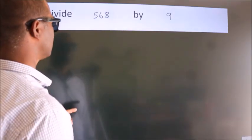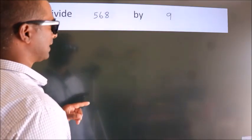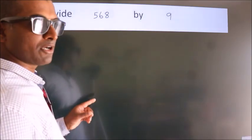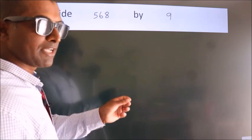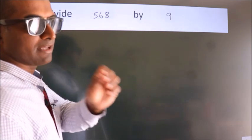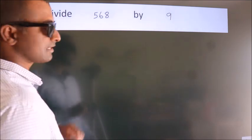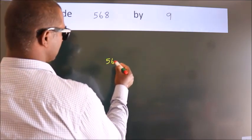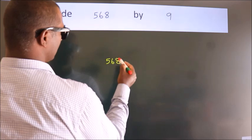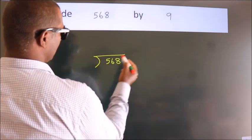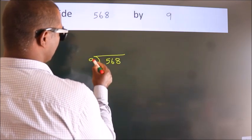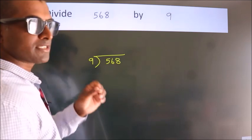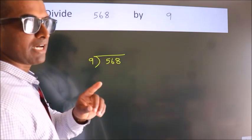Divide 568 by 9. To do this division, we should frame it in this way: 568 here, 9 here. This is your step 1.